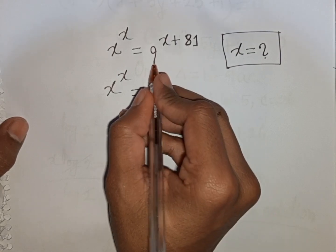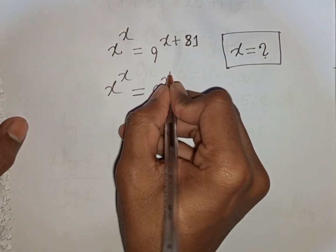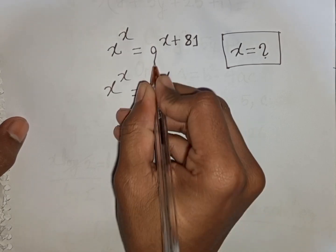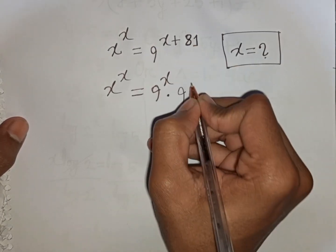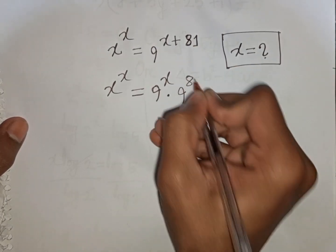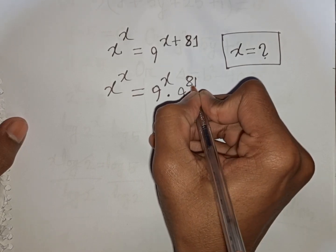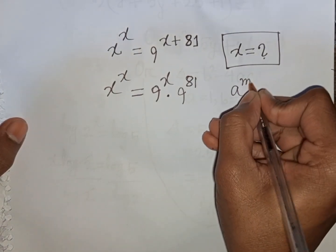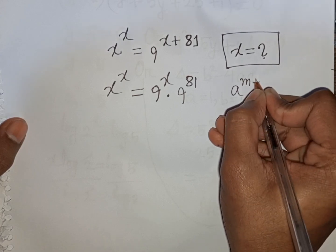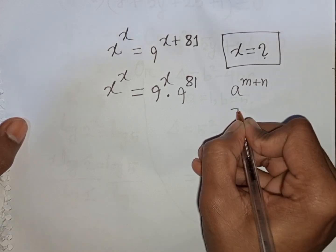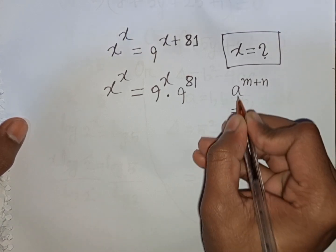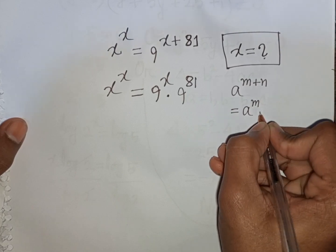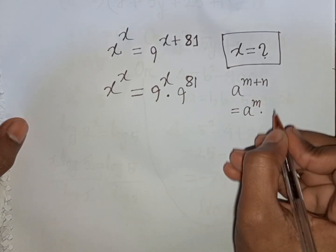That means it will be 9^x times 9^81. According to the exponential rule, a^(m+n) is equal to a^m times a^n.